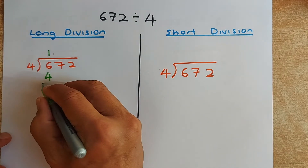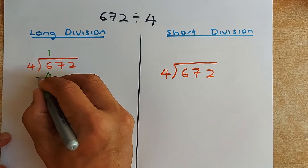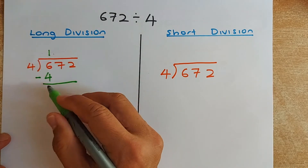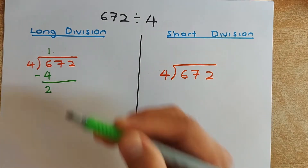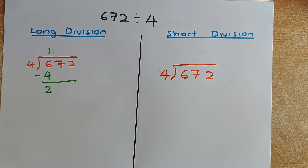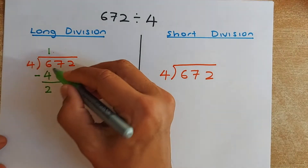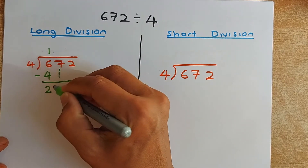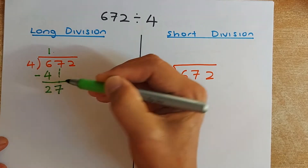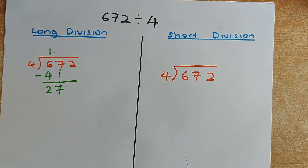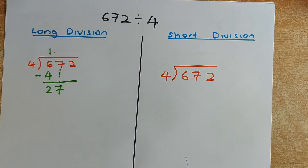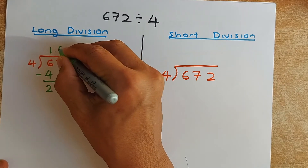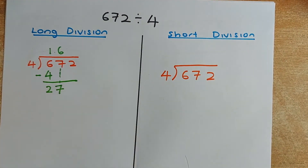Draw a line and minus them. 6 minus 4 gives you 2. Now the next step: bring down the next number, the 7, so it becomes 27. Now divide 27 by 4. If you know your 4 times table, it is going to be 6. 6 times 4 is 24, so you put 24 here.